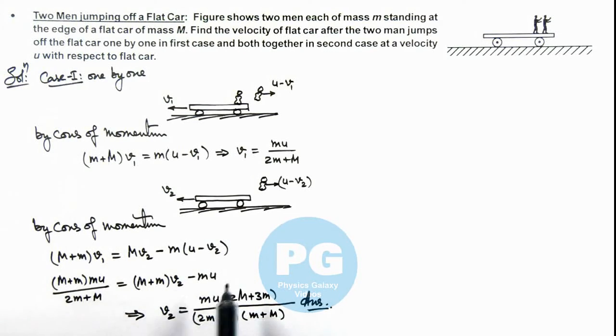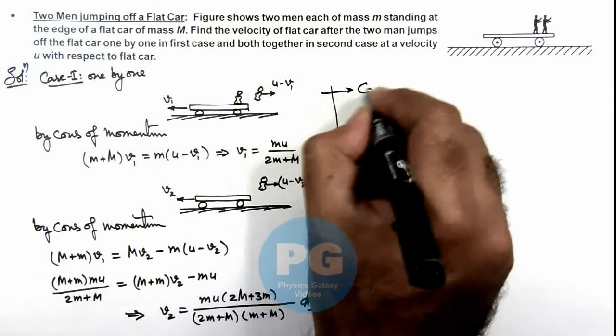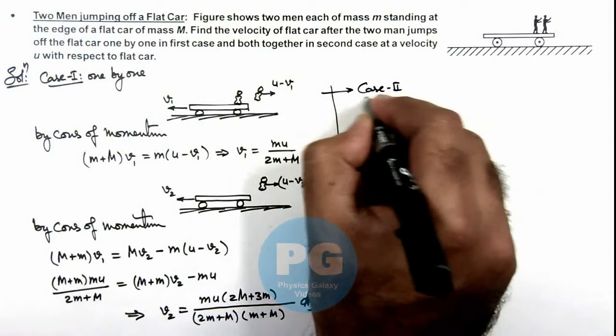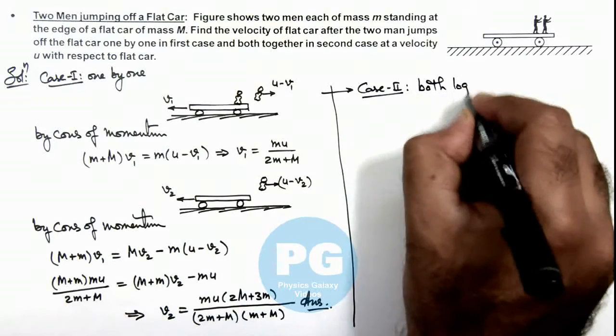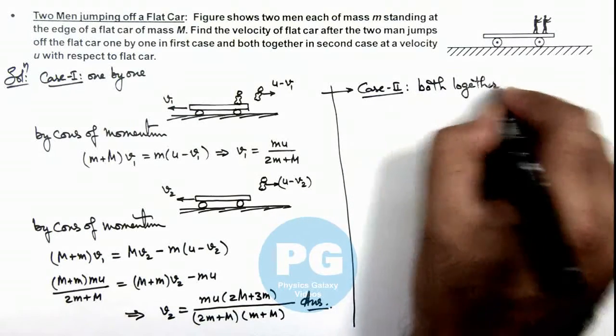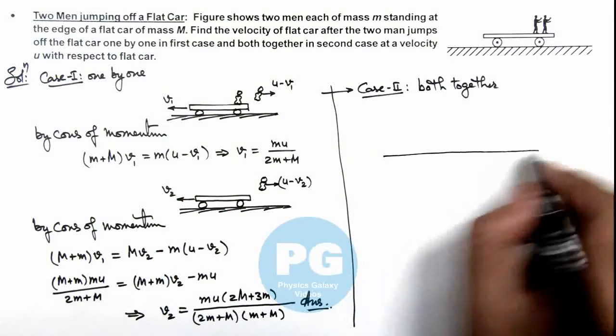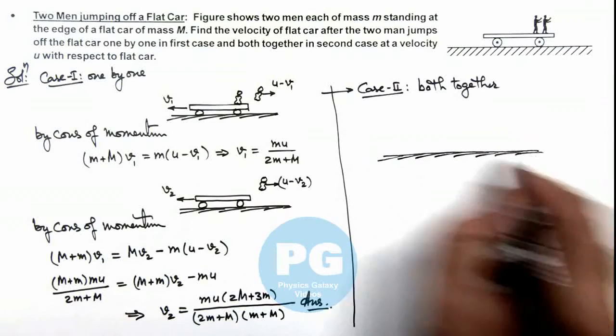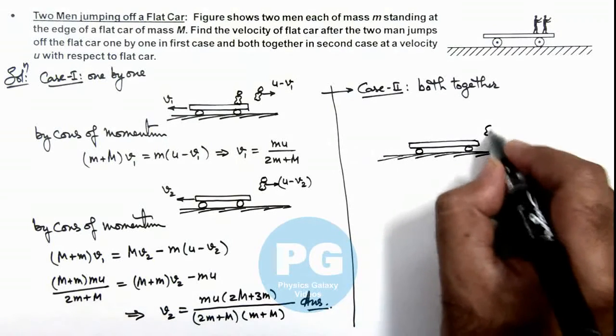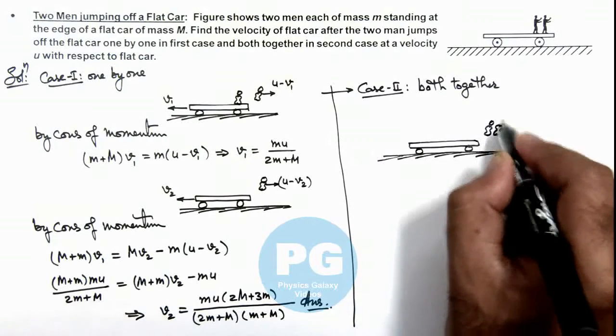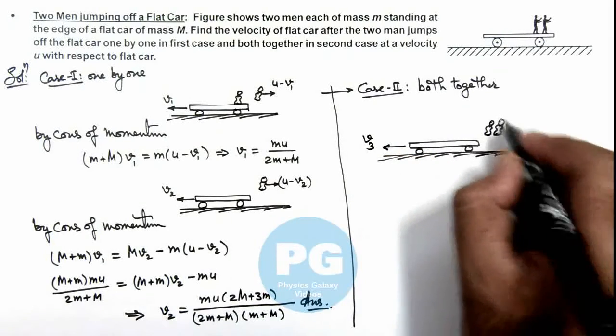Now we can further continue our Case 2 here. If we talk about Case 2, when both men jump together, so we can write the case both together. Earlier we have discussed when men jump one by one. So if these two men jump together, you can see initially the car was at rest, and when the two men jump together, then the car attains a velocity v3, and these two men will be having velocity (u - v3), as u is with respect to the car.